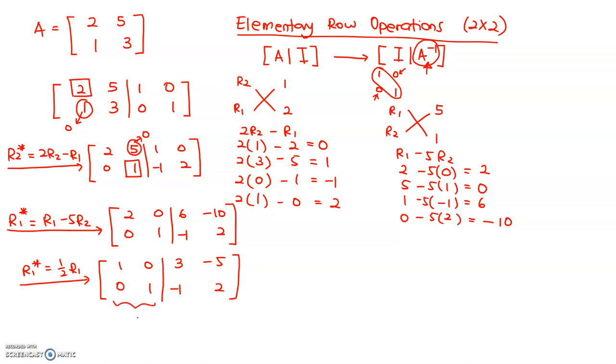There you have it. We have identity on the left hand side and the inverse on the right hand side. Therefore, the A inverse is [3, negative 5; negative 1, 2].